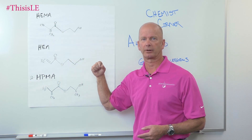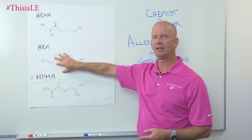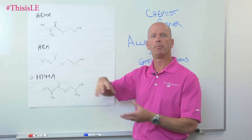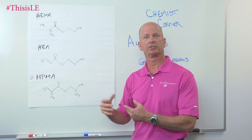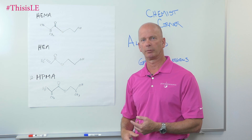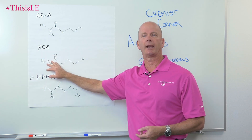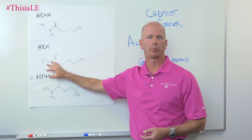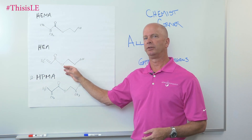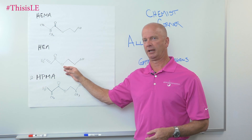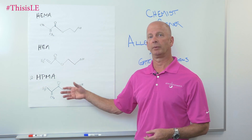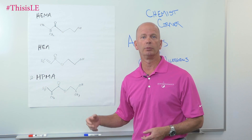HEMA is hydroxyethylmethacrylate. The difference between HEMA and HEA is that HEA does not have a methyl group on the end, which causes a steric hindrance. That steric hindrance slows down the chemical reaction. So HEA is faster reacting on its own, or if it's coupled with a larger molecule. If you use HEA as a monomer in a gel product, it thins out the viscosity of the material, which makes it easier to apply.